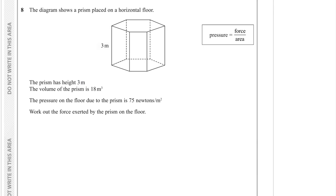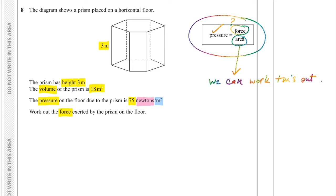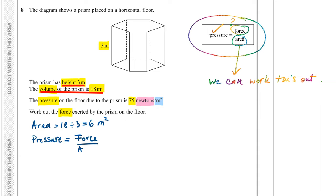Question 8. A prism on a horizontal floor has height 3 metres and volume 18 metres cubed. The pressure on the floor is 75 newtons per metre squared. Find the force. We need the area: dividing volume by height gives 18 divided by 3 equals 6 metres squared. Using pressure equals force over area: 75 equals force over 6. Rearranging, force equals 75 times 6, which is equal to 450 newtons.